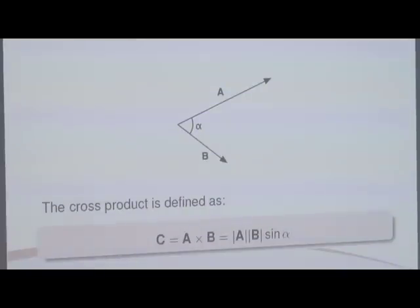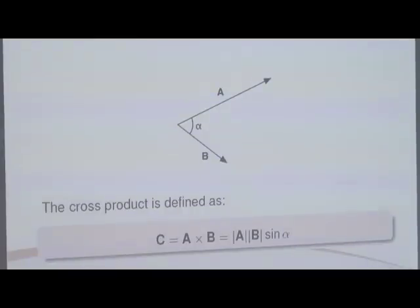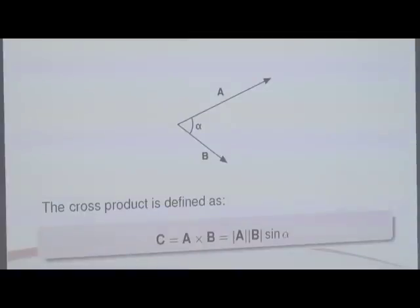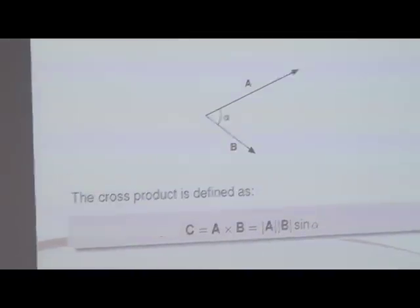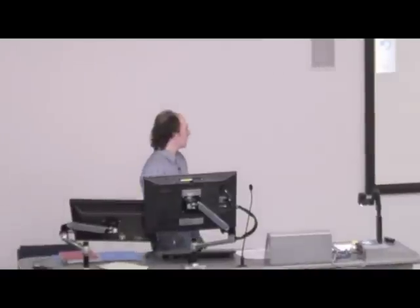If there's an angle between them — we've got angle alpha between A and B — since we want to work out A cross B, you start at A and sweep through the shortest angle to get to B, in this case just under 90 degrees. Now since it's a vector it must have a direction as well as a magnitude. The direction: you sweep through from A to B, and in this case that's a clockwise rotation.